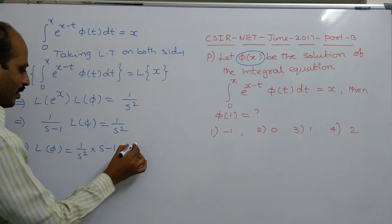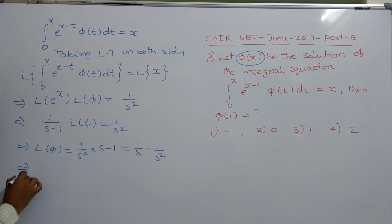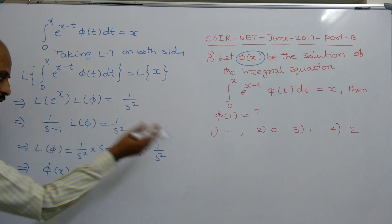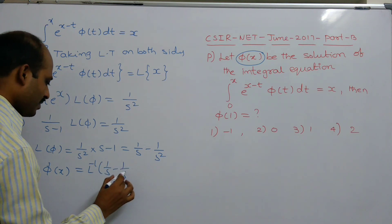You get s by s square, 1 by s, minus 1 by s square. You have to find φ of x. By shifting L to right side, you get L inverse of 1 by s minus 1 by s square.